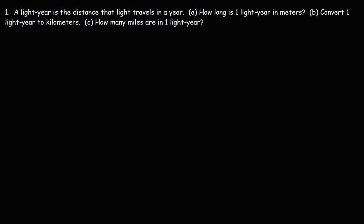So let's start with part A. How long is one light year in meters? In order to get this answer, we need to calculate the distance that light travels in a year. The distance is going to be equal to the speed of light multiplied by the time that it travels.